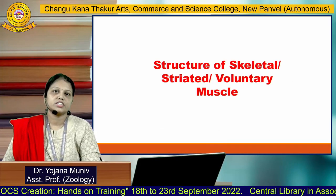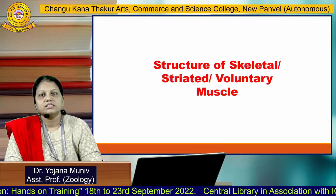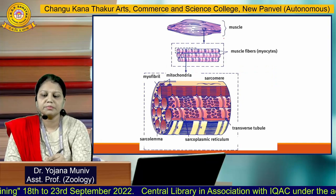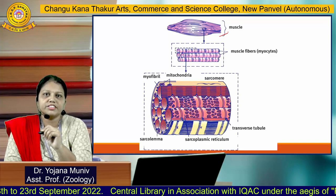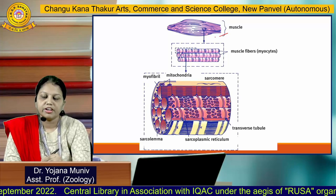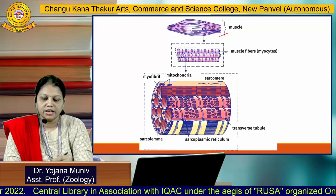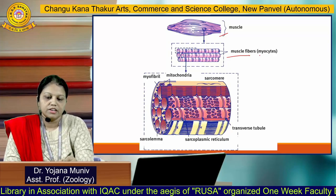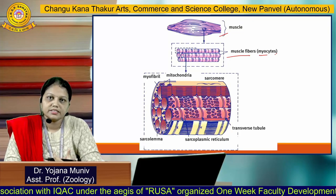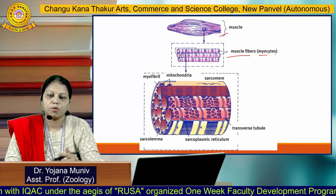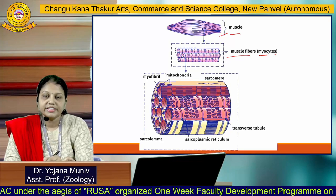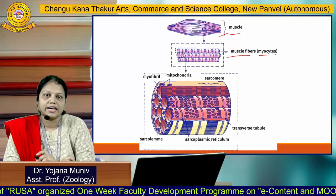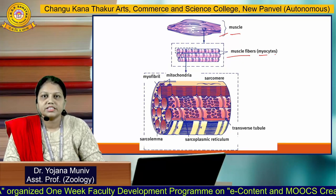Now we will see the structure of skeletal muscle, also called striated and voluntary muscles. These muscles are attached to your bones with the help of tendons. When we take a small part of this muscle, many muscle fibers come together — these are called myocytes. These myocytes form bundles which make up the muscles, and when examined they show the alternate dark and light bands.